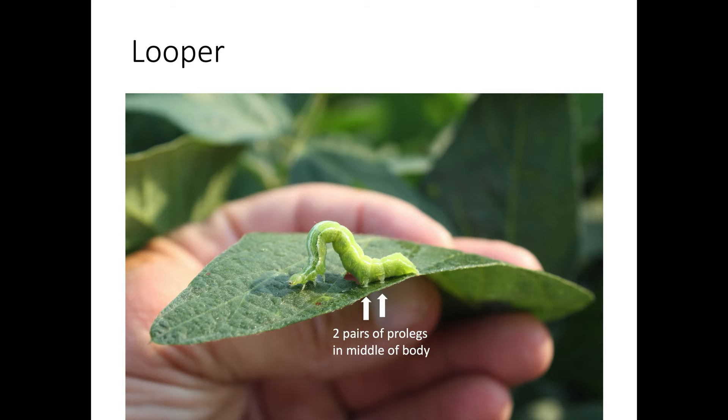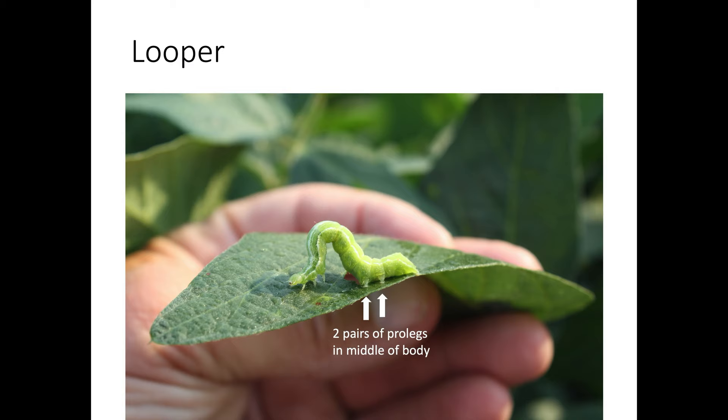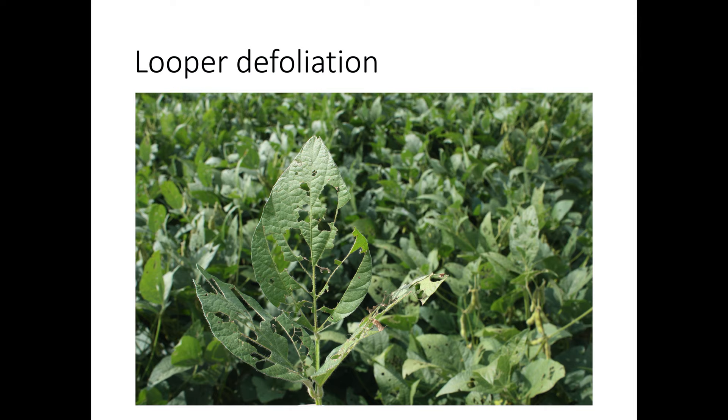This is a looper — looper has two syllables, two O's in the word looper, and two pairs of pro legs in the middle of the body. We can have both cabbage loopers and soybean loopers in Tennessee, and both may be present in our fields at the same time. Both cabbage and soybean loopers are green in color and have two pairs of pro legs in the middle of the body. They are defoliators also, and after some experience you'll be able to tell them apart just by looking.